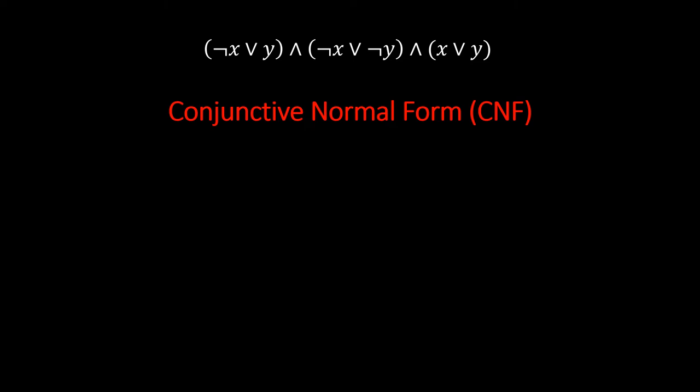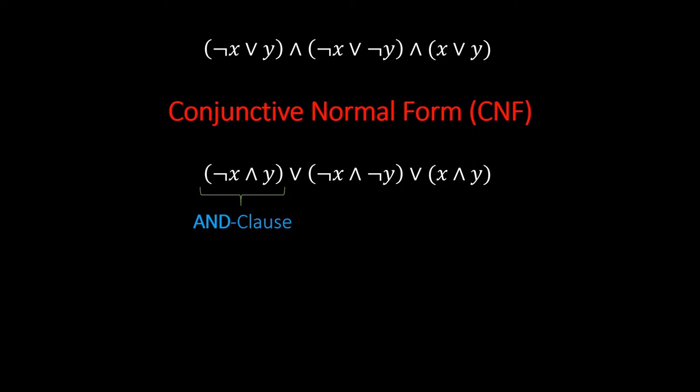You might now be wondering why a big conjunction of disjunctions, and not the other way around? To answer this, let's briefly look at what happens with our formula if we exchange ands with ors. This time, we call the clauses and clauses to distinguish from the previous case. This formula is said to be in disjunctive normal form, or DNF for short. Do you think satisfiability is harder for CNF or for DNF formulas? It turns out, one of them is solvable in linear time, while the other is one of the hardest problems in theoretical computer science to date.